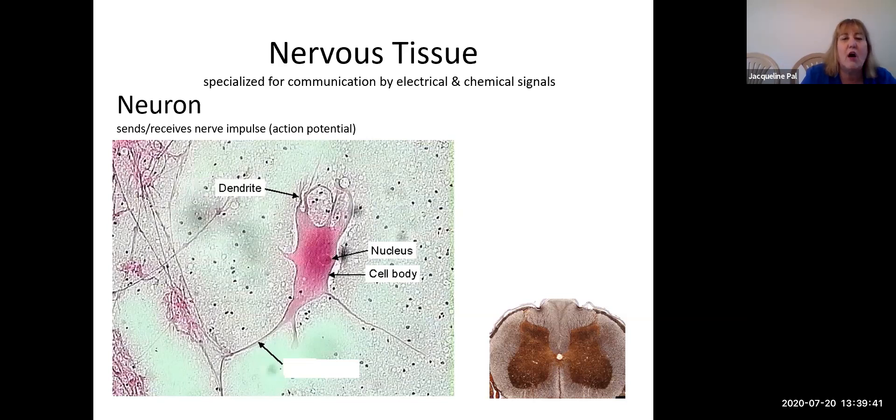And so these are each known as a dendrite. So we have many incoming messages to a neuron, but we only have one pathway out. And the one pathway out is through a structure known as an axon. That's it for neurons.